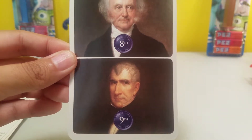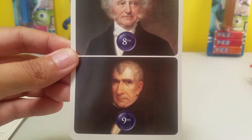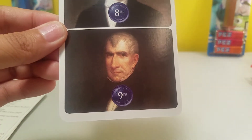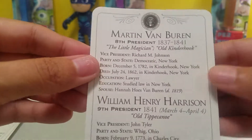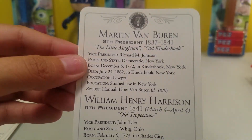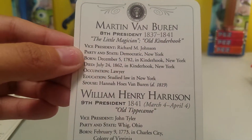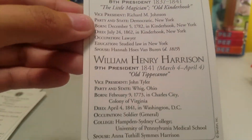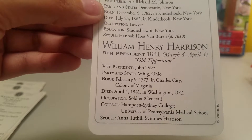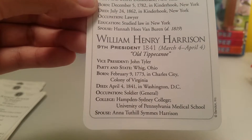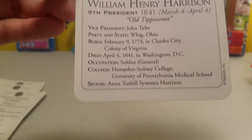Here we have the eighth and ninth president. The eighth is Martin Van Buren, and the ninth is William Henry Harrison.